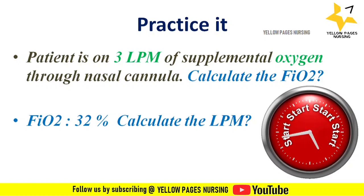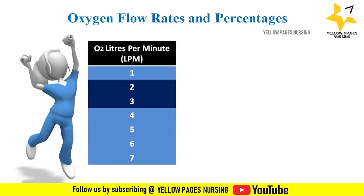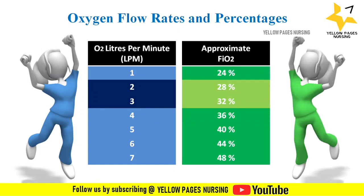Here is a reference column showing oxygen flow rate in liters per minute alongside the corresponding FiO2 percentage. If the oxygen flow rate is 1 liter per minute, the FiO2 is 24%, and it increases by 4% for each additional liter. You can also find the answers to the previously asked practice questions in this column.